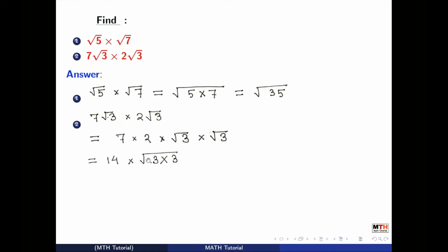So let's move. Now we get 14 times square root of 3 squared as we have 2 threes here.